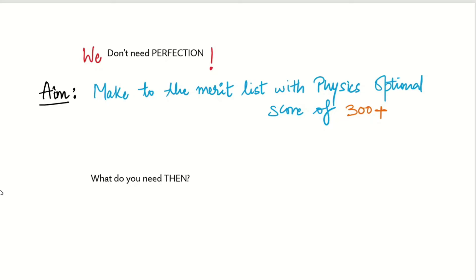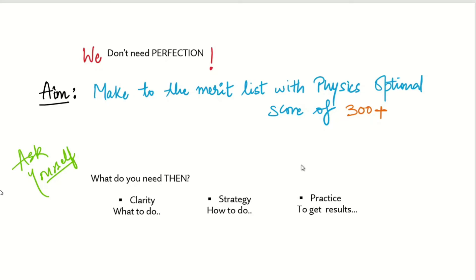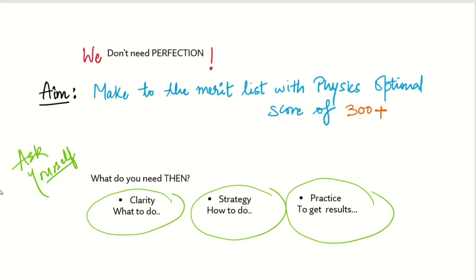If you know your aim, then ask yourself what you need to achieve it. There are three things: first, clarity — what to do; second, strategy — how to do it; and third, practice. Everyone knows practice is the key to getting results. We need these three things to achieve our aim.